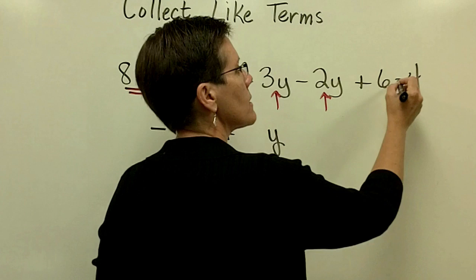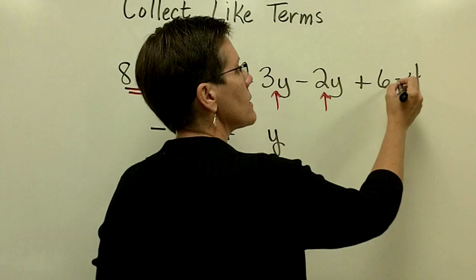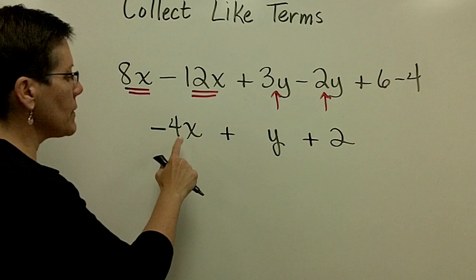And then finally, I'm going to add 6 and take away 4. 6 minus 4 is 2 and I'm all done. Typically write this in alphabetical order, so x's first then y's.